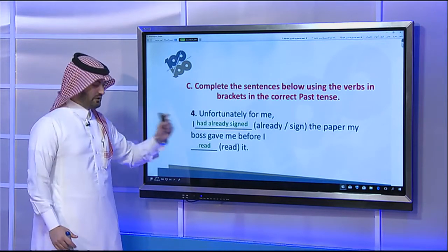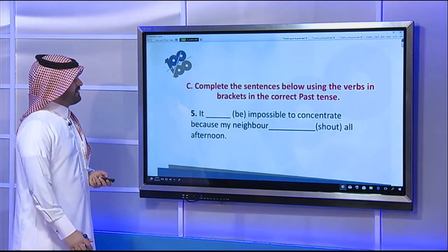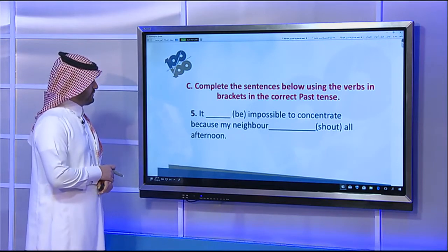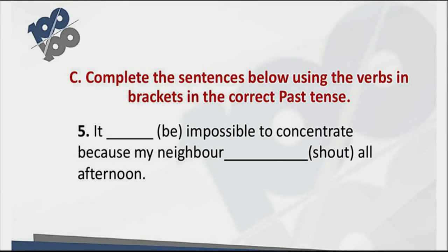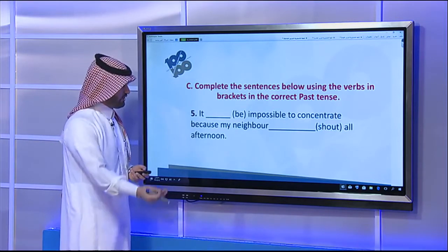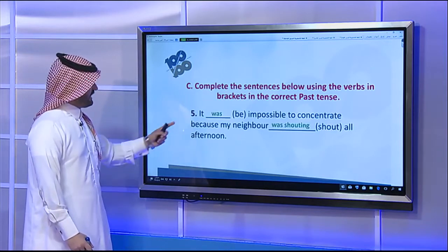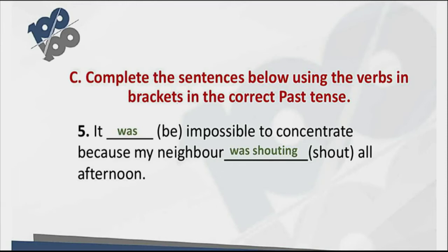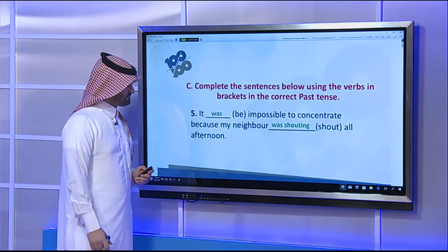Sentence five: 'It ___ impossible to concentrate because my neighbor ___ all afternoon.' The neighbor's action was long and ongoing — past progressive: 'was shouting'. The state of being impossible to concentrate was short and completed — past simple: 'was'. So: 'It was impossible to concentrate because my neighbor was shouting all afternoon.' Past simple for the short state, past progressive for the ongoing action.